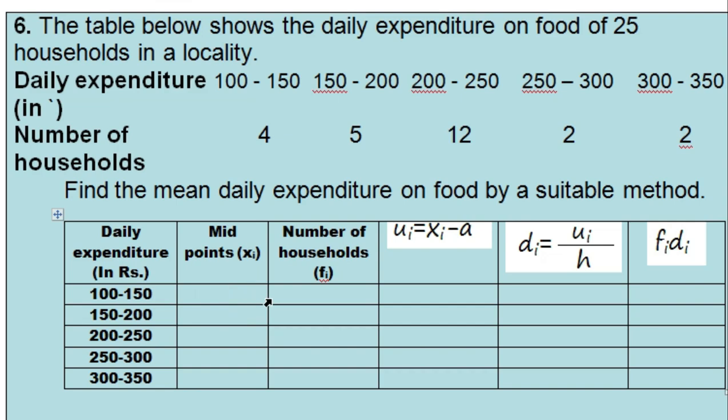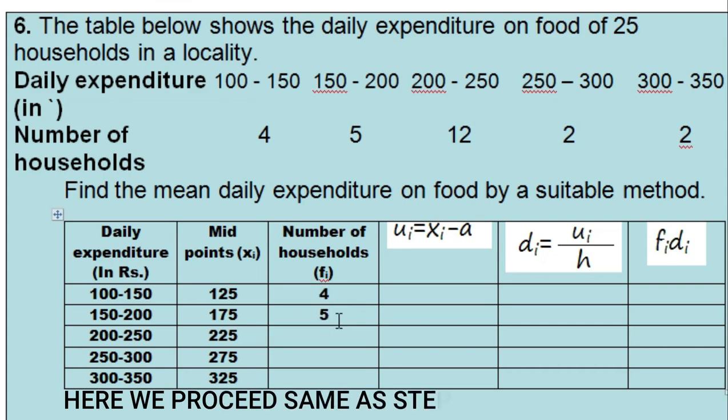Midpoints: you already know how to find out. 100 plus 150 divided by 2, so it will be 125, then increases by 50, so we can add by 50. It will be 175, then add again 50 with 175, you will get 225, then 275, then 325. The fi's are 4, 5, 12, 2, 2.